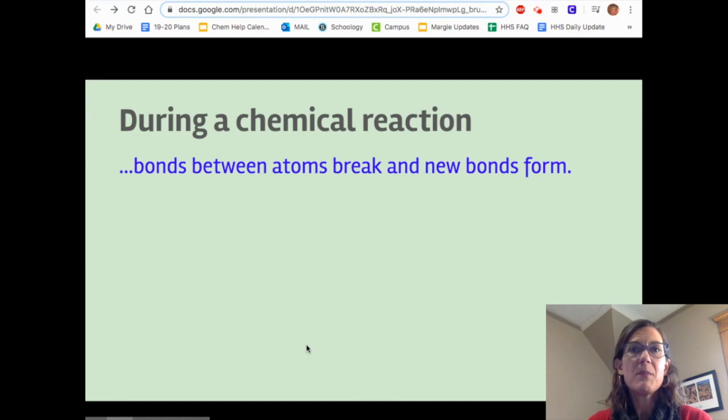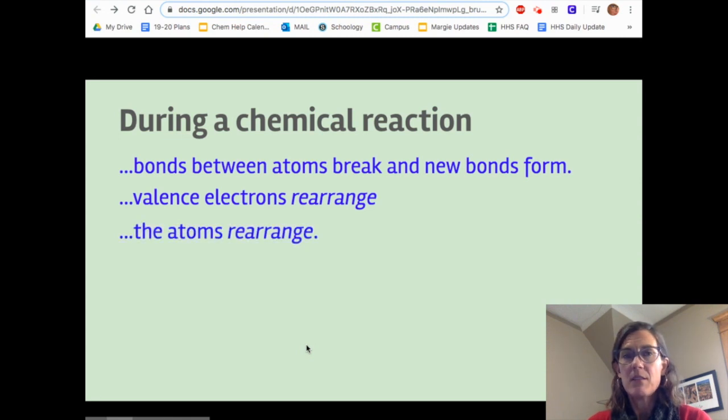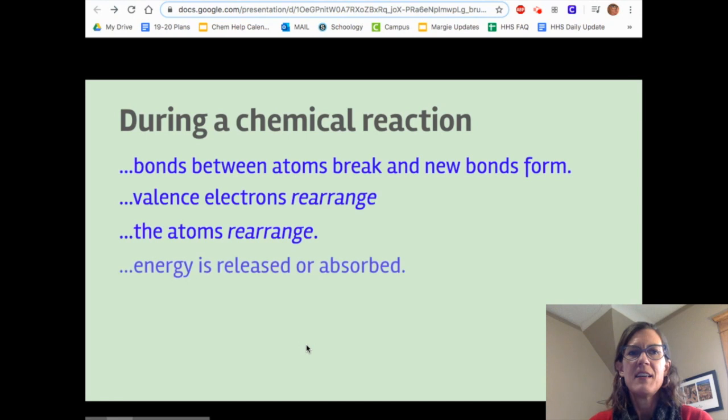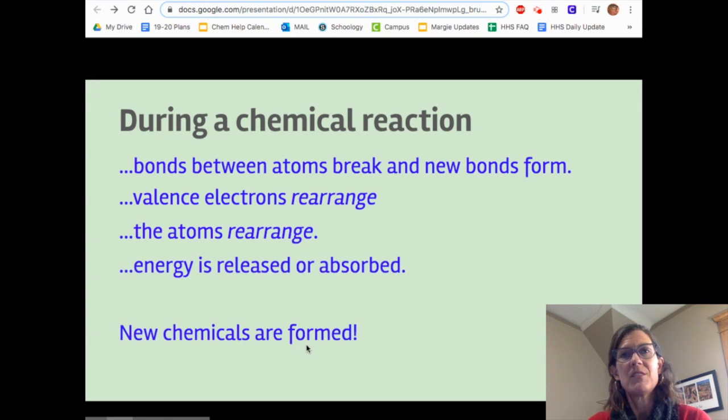Bonds between atoms break and new bonds form. We've been learning about covalent bonds and ionic bonds. So the bonds between atoms break and new bonds form, valence electrons rearrange. The atoms then rearrange because they're bonded in a new way, and energy is released or absorbed. New chemicals are formed. You might think of the atoms as rearranging like Legos or bricks that you might put together and take apart.